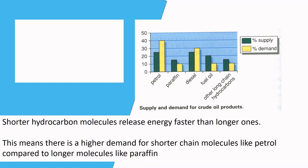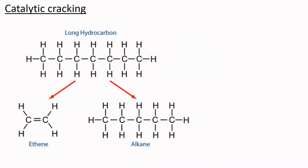We do cracking. This is just splitting up long hydrocarbon chains into smaller ones. You can see here that a seven carbon heptane molecule is split into a five carbon pentane and a two carbon ethene.